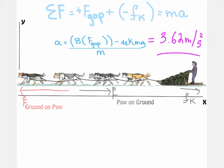So now, you can solve the rest of the problem and plug in the numbers to get 3.62 meters per second squared. I hope that you found this video helpful.